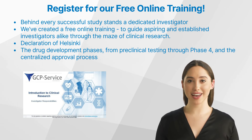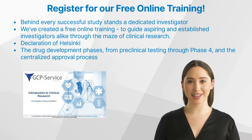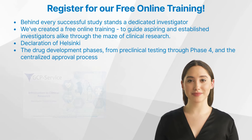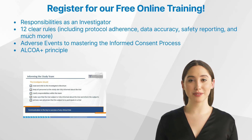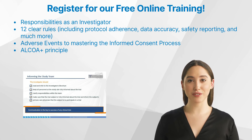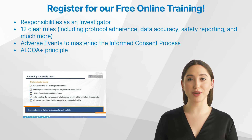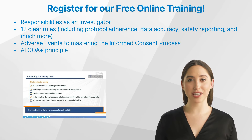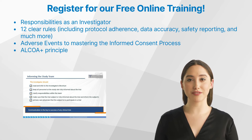Understanding these phases is key to grasping the broader context of clinical trials. But what are your responsibilities as an investigator? We've broken them down into 12 clear rules, including protocol adherence, data accuracy, safety reporting, and much more. With our training, you'll learn the importance of each responsibility and how to fulfill them effectively.